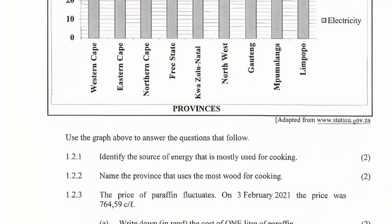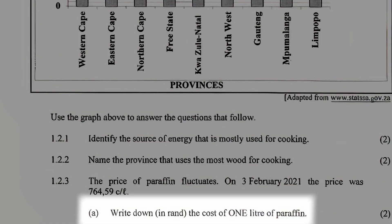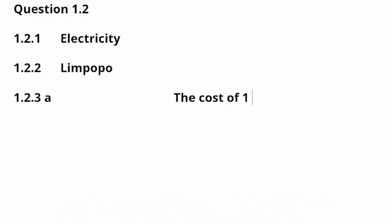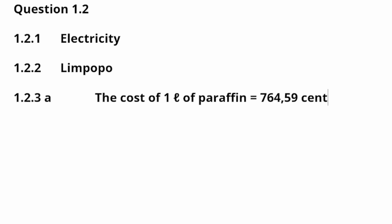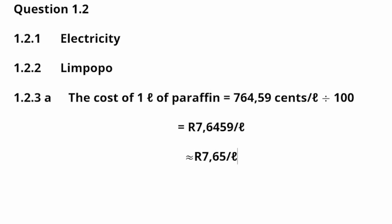Moving on to question 1.2.3. The price of paraffin fluctuates. On the 3rd of February 2021, the price was 764.59 cents per liter. Part A asks us to write down in rands the cost of 1 liter of paraffin. The cost of 1 liter equals 764.59 cents divided by 100, which gives us 7.6459 rands per liter. Rounded off to two decimal places, the final answer is R7.65 per liter.